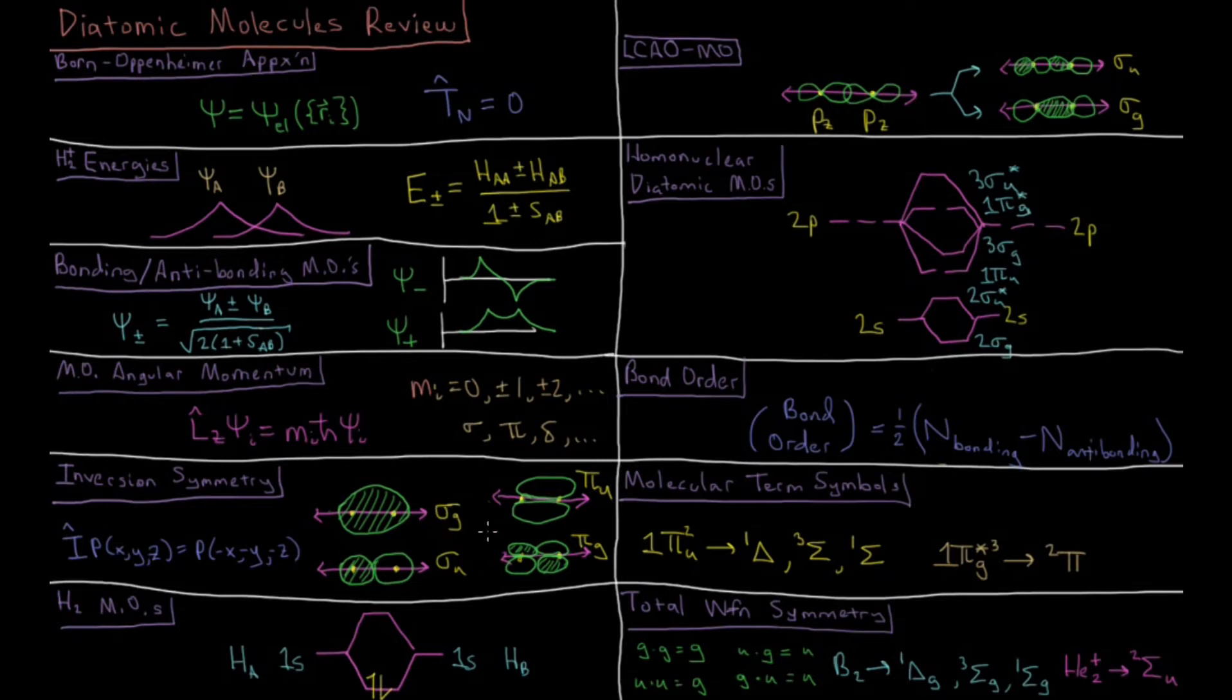Sigma g's being the bonding, pi u's being the bonding, and then pi g's and sigma u's being antibonding.